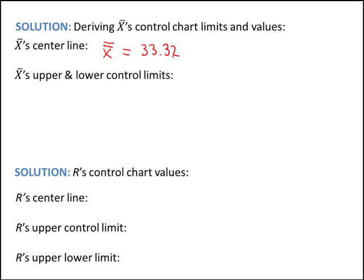The upper and lower control limits are a little bit confusing the way they're derived, so let's take a minute to work through them. We start at the center line, x-bar-bar, and go up three standard deviations to get the upper control limit and down three standard deviations to get the lower control limit. So we add plus or minus three times sigma of x-bar — the standard deviation of the x-bars — which equals sigma divided by the square root of n, where n is the subgroup size of 5. Now we don't know the population standard deviation, so the best we can do is estimate it.